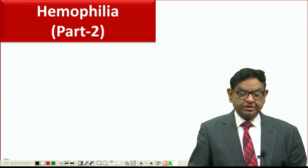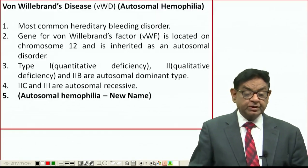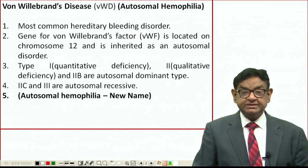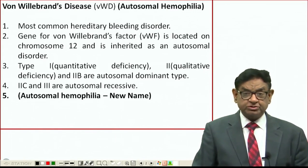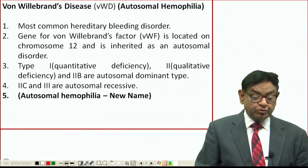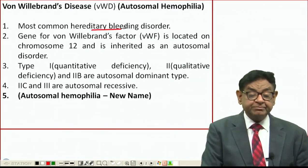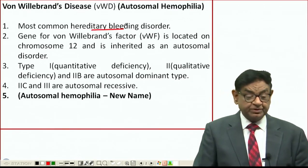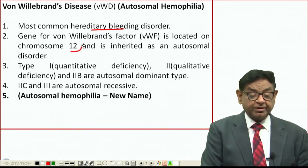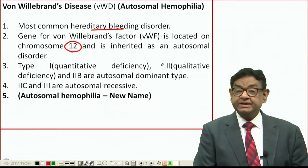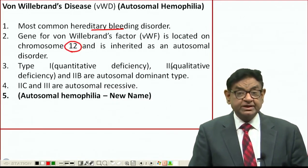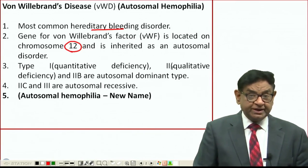We continue our discussion on haemophilia. I'll be talking about von Willebrand disease, also known as autosomal haemophilia. It is the most common hereditary bleeding disorder, and the gene for this is located on chromosome 12.